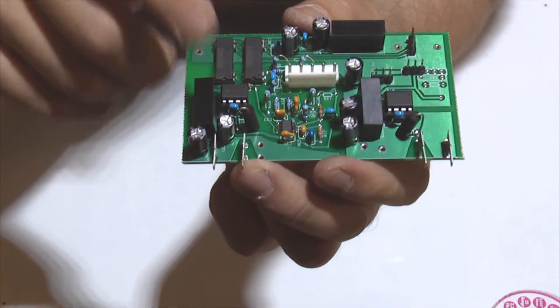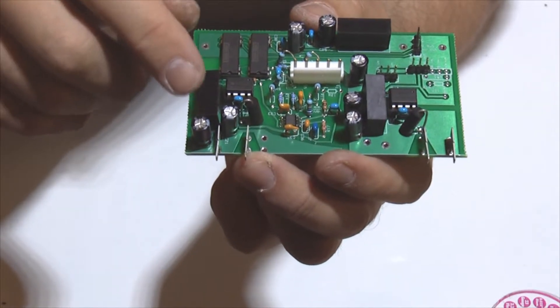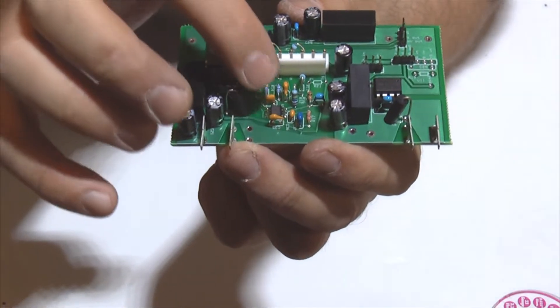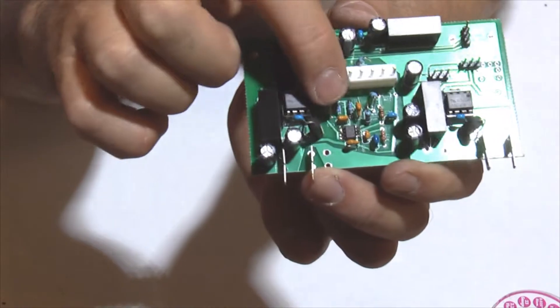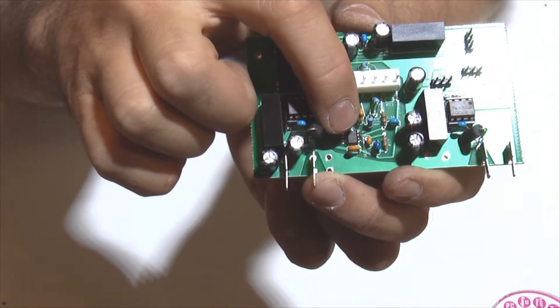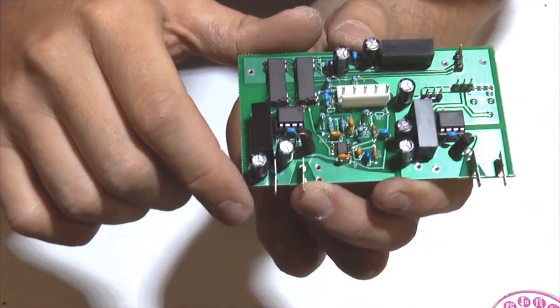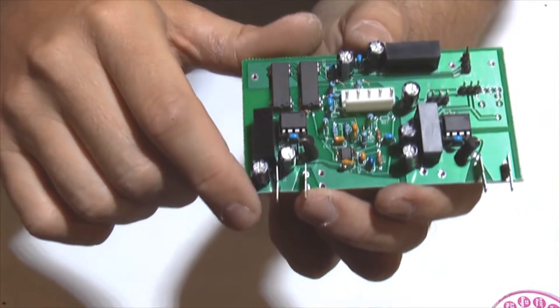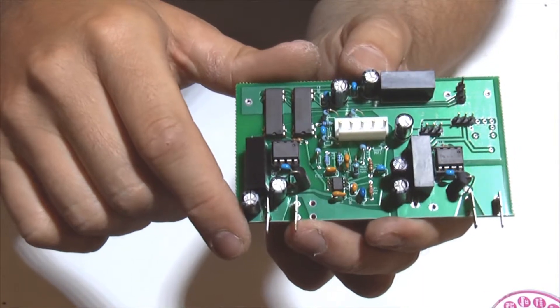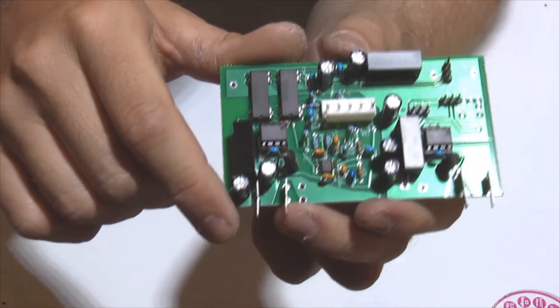This little chip here, the only surface mount component, is a PFC chip. It operates at 22 kilohertz and shapes the input current so that to the AC mains the charger looks like a resistor.